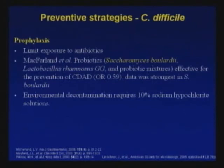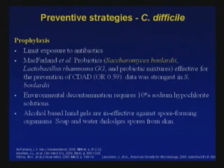Environmental decontamination requires bleach wipes, which can be recommended for patients who have struggled with repeated infections over time. Something important to keep in mind is that the alcohol-based hand gels that are everywhere in our environment do not kill C. difficile spores. The only way to achieve hand decontamination is soap and water — it won't kill the spore, but it will dislodge it from the skin. When dealing with parents of newborns, since C. difficile is part of the enteric flora and diaper changing is a reality, we educate them to be very careful with hand washing and to wash hands prior to food preparation and meals.